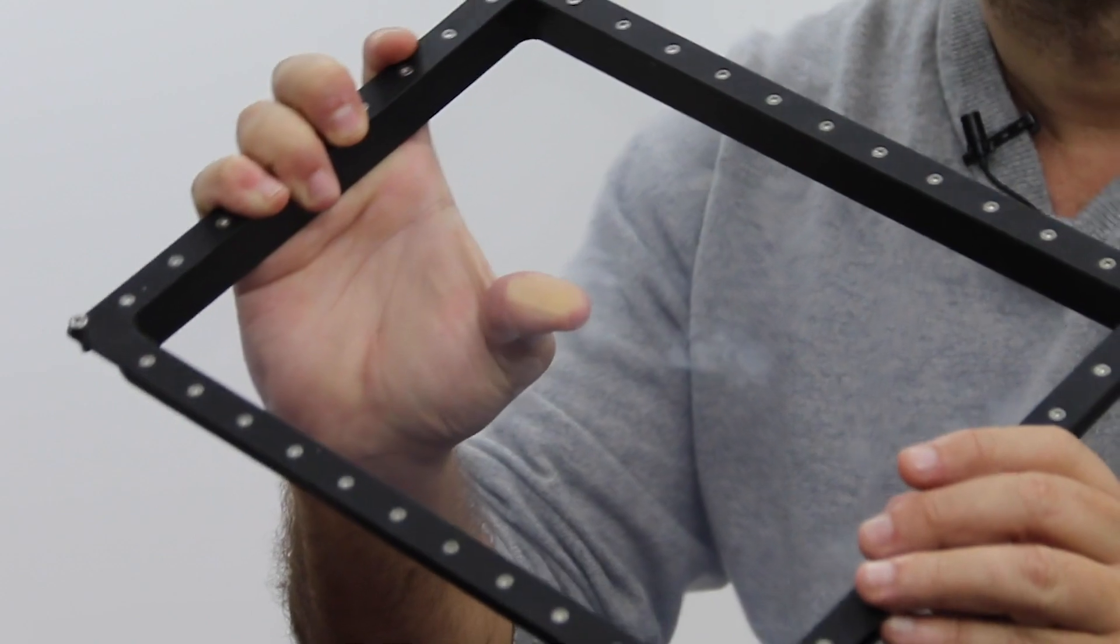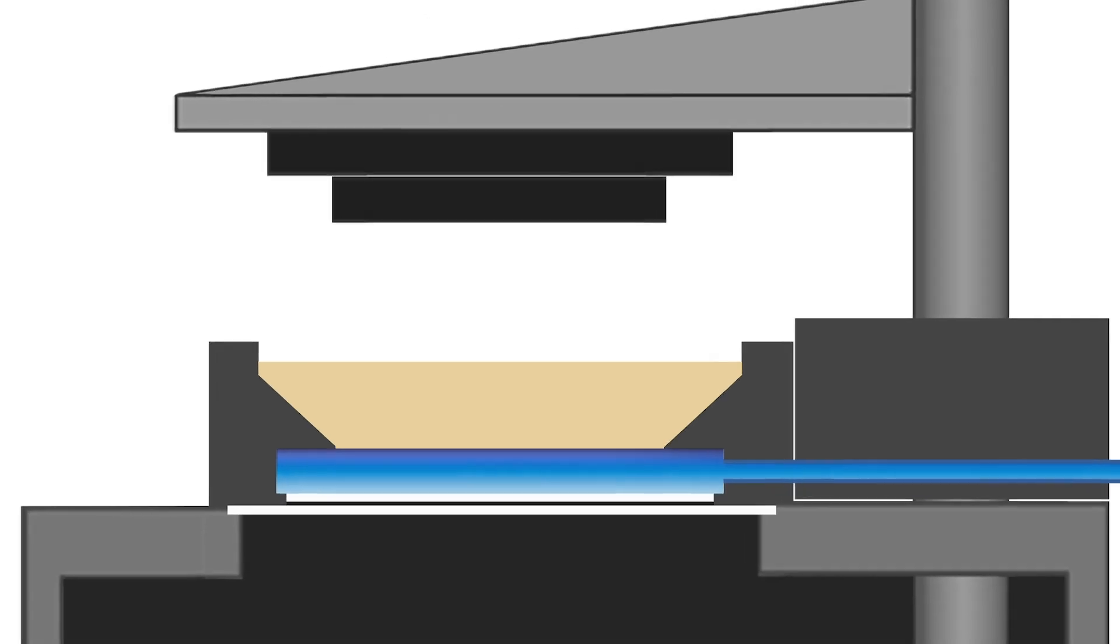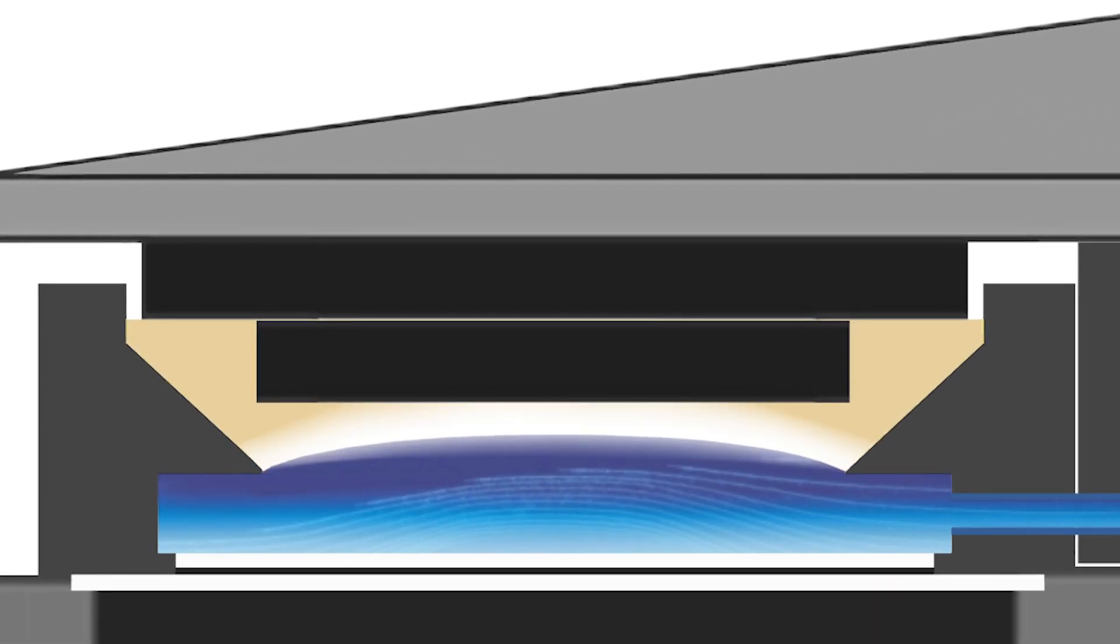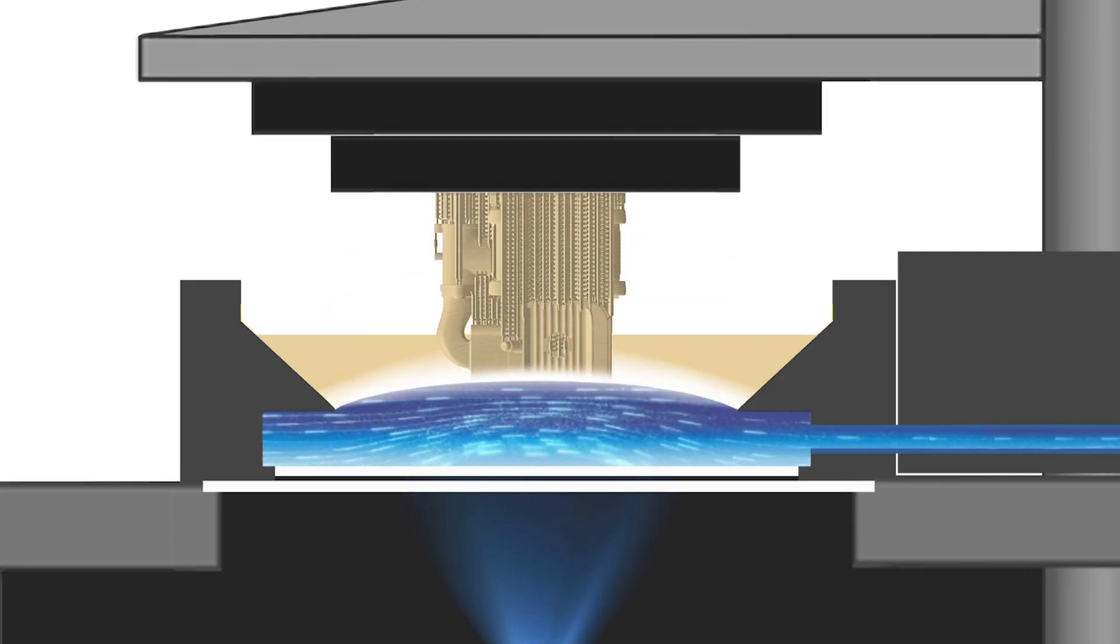There's one big issue with oxygen permeable film. When you apply oxygen from below, you create a dome effect. When trying to build a flat part, you'll create circles that represent the dome.